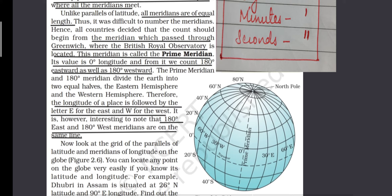Writing W and E is very important to show the exact location of a place. It is interesting to note that 180 degree east and 180 degree west meridians are on the same line. This 180 degree longitude is also known as the international date line.